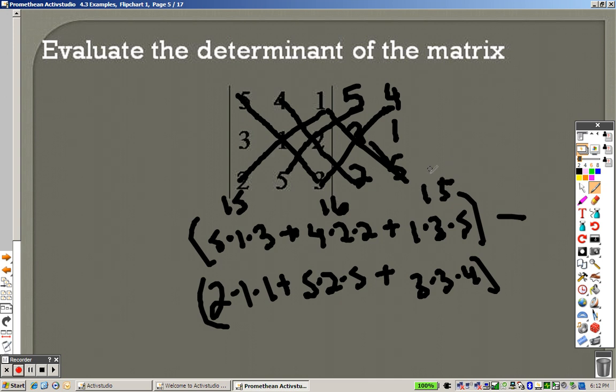When you add all those together, you get 46. Minus the bottom is 2 times 1 times 1, which is 2, plus 5 times 2 times 5, which is 50, and 3 times 3 times 4, which is 36. So 2 plus 50 plus 36 is 88. So 46 minus 88, you end up getting negative 42 as your answer.